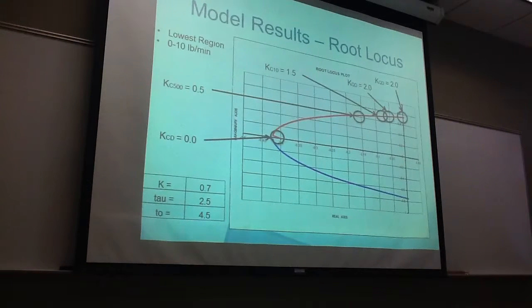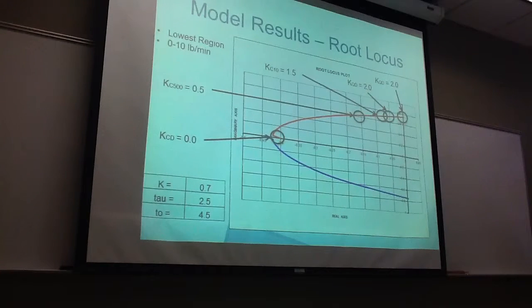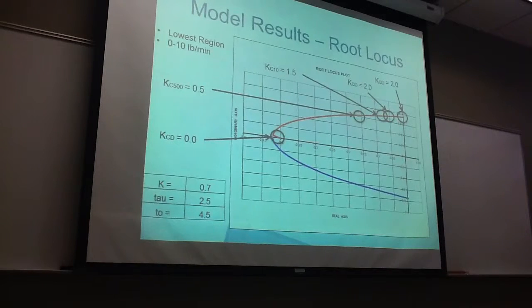And our ultimate is, I think that's actually supposed to be 3.0, not 2. And that's at 90 degrees. And this is using a gain of 0.7, a tau of 2.5 seconds, and a dead time of 4.5 seconds.